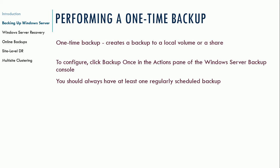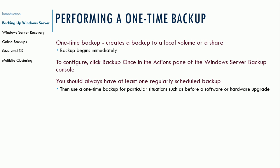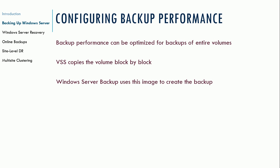If you need to do a backup one time, you can do a one-time backup, which creates a backup of the local volume or a share, and the backup begins immediately. A one-time backup is useful for particular situations, such as before a software or hardware upgrade — that's generally a good time to do one so you have something to go back to that's as close to when you started as possible, or if you suspect that your backups are corrupt.